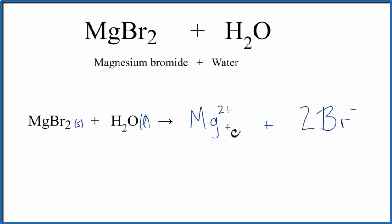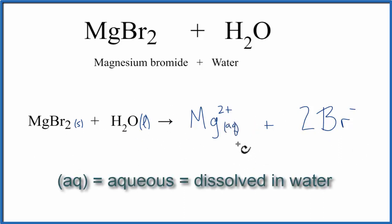We can also write Aq after magnesium, because this is dissolved in water. And Aq means aqueous, dissolved in water.